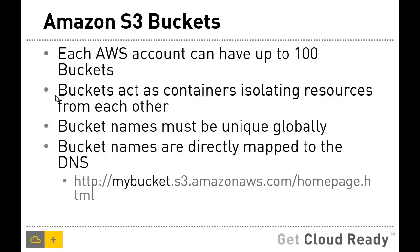There are three concepts to understand when it comes to Amazon S3. The first one is the bucket. When you sign up for Amazon, you get access to S3 and the very first thing you need to do is create a bucket. You can create up to 100 buckets. Buckets act as boundaries to isolate resources stored on S3, making it easy to classify objects. Since bucket names are directly mapped to DNS and accessible from the browser, they must be globally unique.